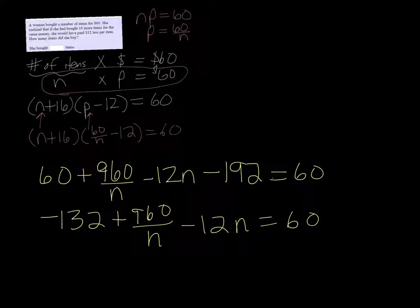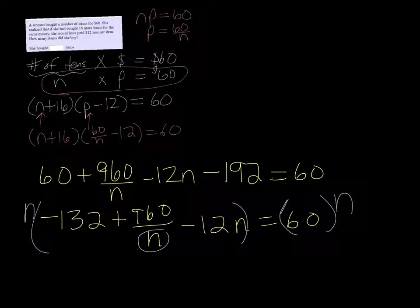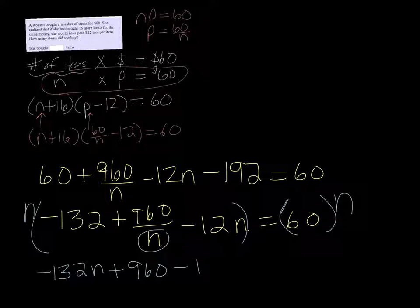And to solve this problem we're going to need to have one side, well we actually probably wouldn't know that yet, we might not recognize that yet, so let's just go ahead. We don't want our variable to be down in the denominator, so I'm going to multiply both sides by N to get it out of the denominator, and we get negative 132N plus 960 minus 12N squared equals 60N.